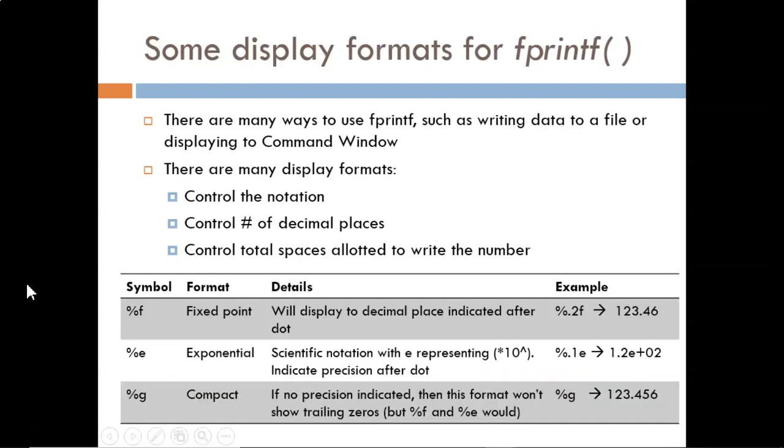There are many ways to use fprintf. We will mainly be using it to display results to the command window, but we could also use it to write results to a text file outside of MATLAB. Further, the characters following the percent symbol can be changed to adjust which notation is used, how many decimal places are shown, and how many character slots in total are allotted for the entire number. For full details, refer to the official MathWorks documentation.